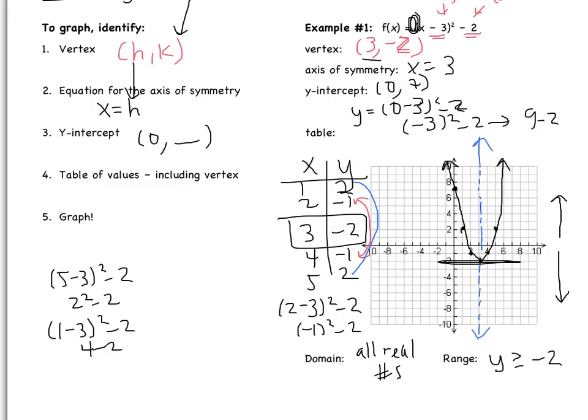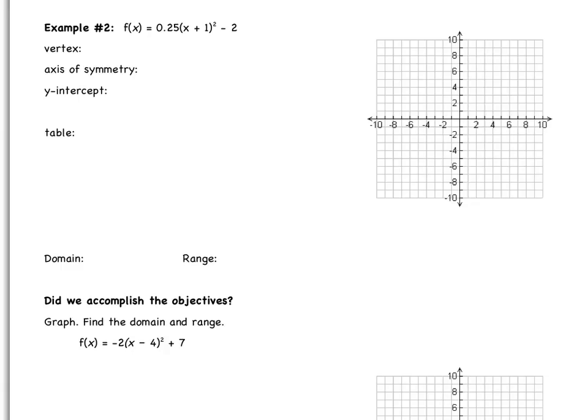We're going to do one more example together, and then you are going to do one on your own. Here's example 2 — it's very similar to what we just did. Let's start by identifying the vertex. Remember that the vertex goes with these two numbers, and I want to switch the sign of the first number and keep the sign of the second number. So my vertex is going to be negative 1, negative 2.